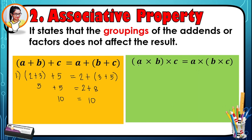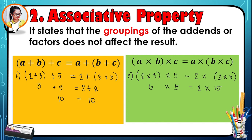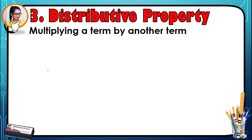Associative property also applies to multiplication. Say we have (two times three) times five, which equals two times (three times five). Performing inside the parentheses first: two times three is six, then six times five is thirty. On the other side, three times five is fifteen, then two times fifteen is also thirty. The groupings do not affect the result when you add or multiply.